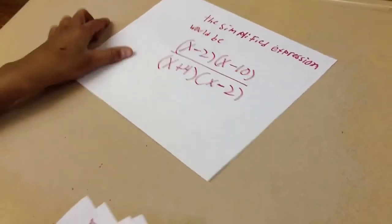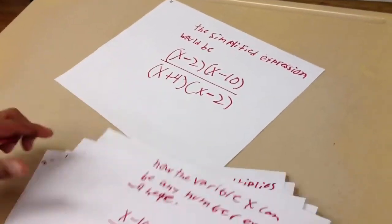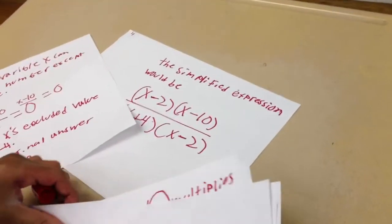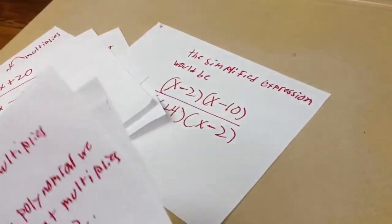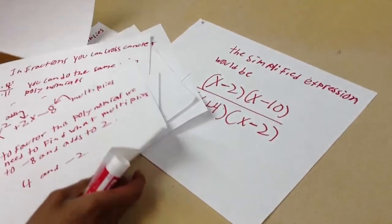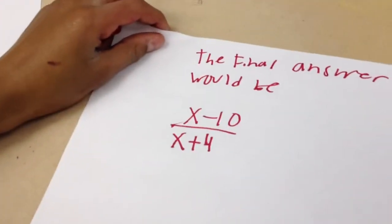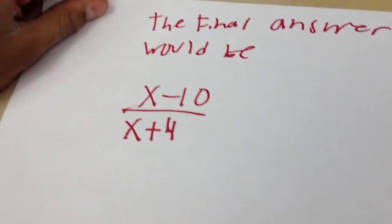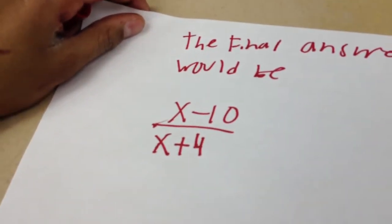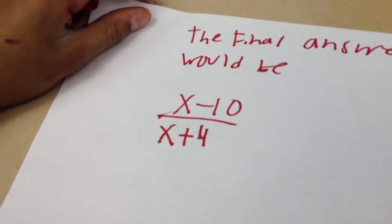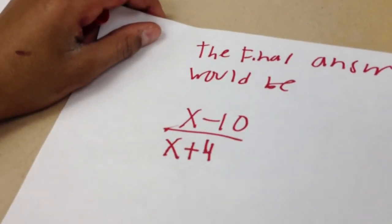And let's do a zoom in to the final answer just so everybody can see. The final answer to our original problem is 3, 2, 1, extreme close-up: x minus 10 over x plus 4, but x cannot be negative 4 and x is not allowed to be positive 2. Awesome.